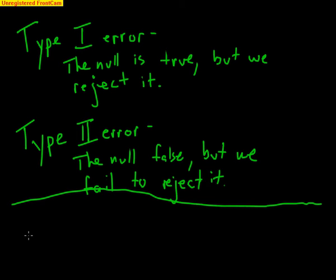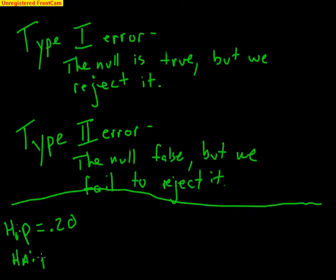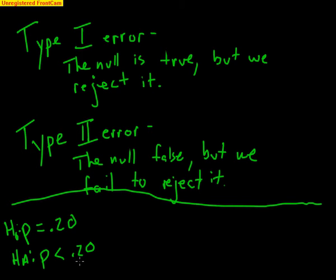Let's quickly talk about the example we did in class earlier: the true proportion of correcting it is 20% — that was the null hypothesis, what we were assuming was true. The alternative was that the true proportion is actually less than 20%. So in a Type I error, the null is true — the true proportion really is 20% — but we reject it and go with the alternative that it's lower when it's really not. We would be adopting a procedure that we think is better, when realistically it's not better at all.